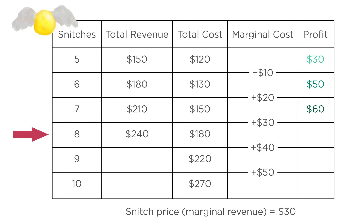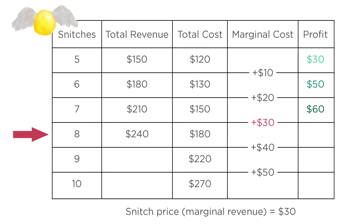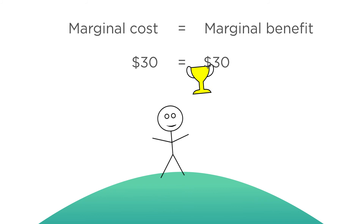Suppose the firm produces an eighth snitch at a marginal cost of $30, exactly equal to the price of $30. Profit stays the same. Marginal cost equals marginal benefit — the firm should stop here. It's at the top of the hill.